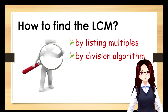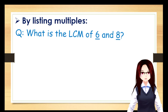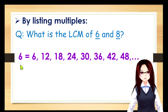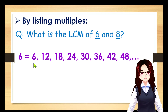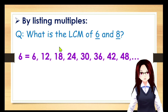By listing multiples, let's try this: what is the LCM of 6 and 8? So let's list the multiples of 6. When you say multiple, it's how many times a number can be multiplied, which results in its multiples. For 6, we have 6, then multiplied by 2 it becomes 12, multiplied by 3 it becomes 18, multiplied by 4 it becomes 24, and so on.